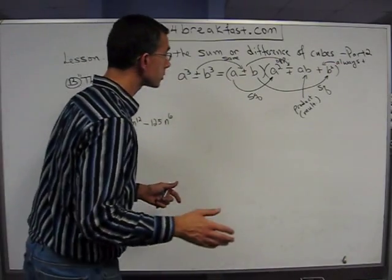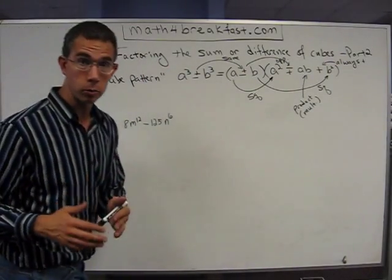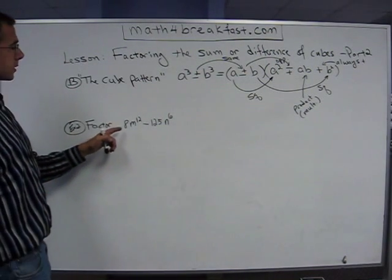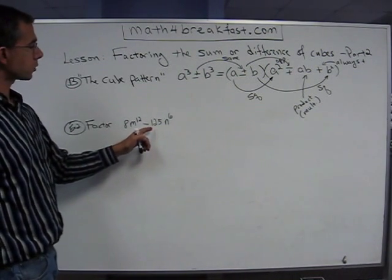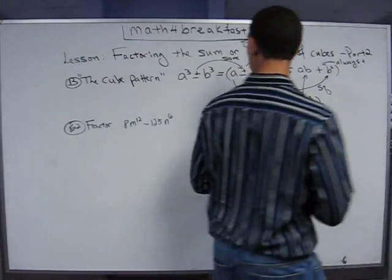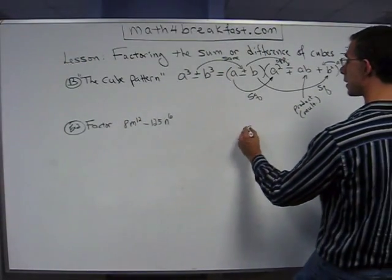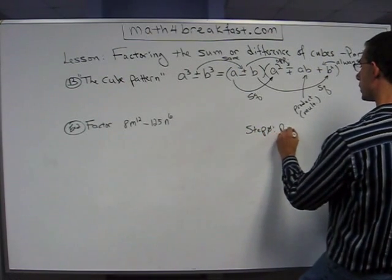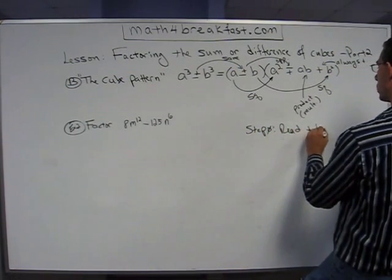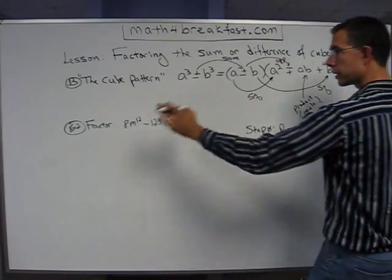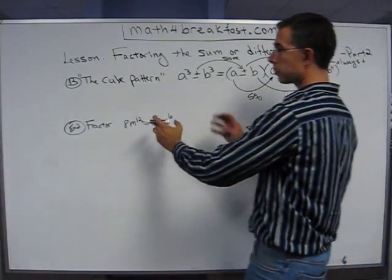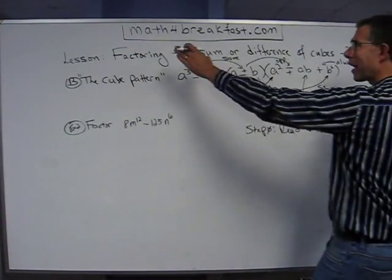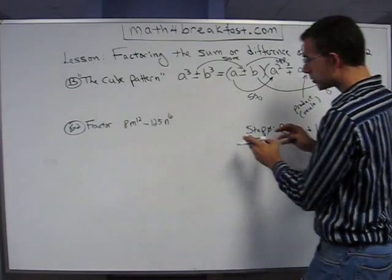So now, the only other option is it could be the difference of cubes. And in this case, it's the difference of cubes because 8 is 2 times 2 times 2 and 125 is 5 times 5 times 5. So I learned all that because I did step 0, which is read and look. I looked at the problem and I saw that this is a cube because 8 is a cube, 2 times 2 times 2, and m is a cube.